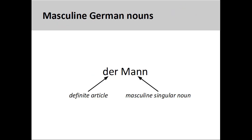The German noun 'Mann,' meaning man, has a masculine grammatical gender, so its definite article is 'der.' In this case, the grammatical gender agrees with the biological gender of the noun. It is also important to note that all German nouns are capitalized.